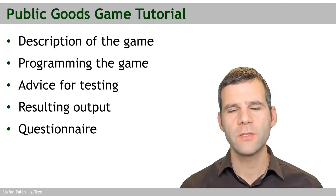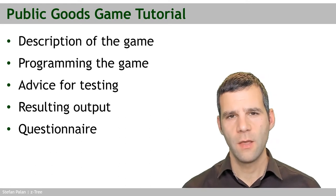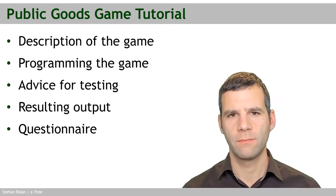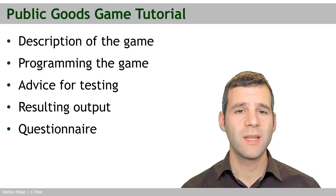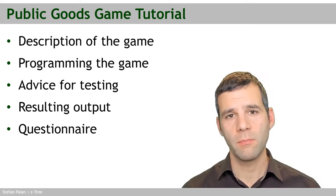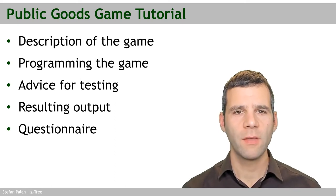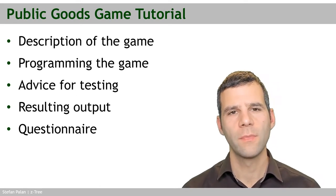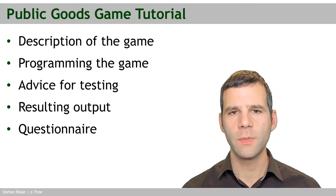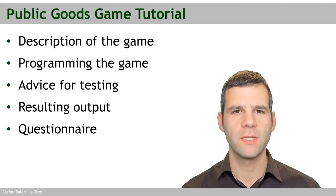In this chapter we will get our hands dirty, so to speak, and program our very first experiment. For this I have chosen the Public Goods Game. This is a famous economic game that has been studied many times, predominantly in experiments. I'm going to describe the game, give you an idea of how many subjects there are, how they interact and what their motivations and incentives are. And then we will actually program the game. I think you will be surprised by how quickly we can create our own first experiment in zTree.